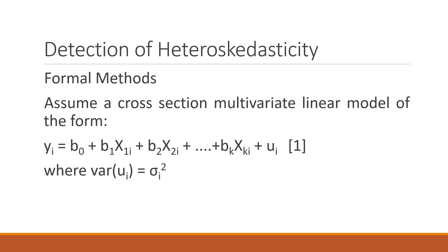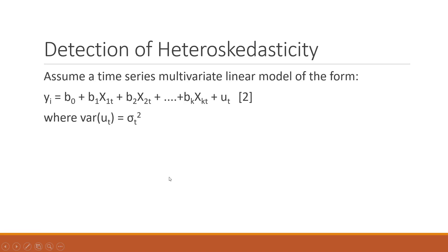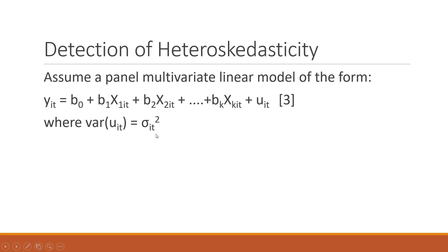Now let us see the formal methods. Assume we have a cross-section multivariate linear model where no time element is involved. Therefore, the variance mu_i equals sigma_i squared. For time series with no cross-section, mu_t equals sigma_t squared. When we consider cross-section and time elements together in a panel model, the variance mu_it equals sigma_it squared. There are many methods to detect heteroscedasticity in the data.